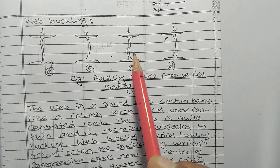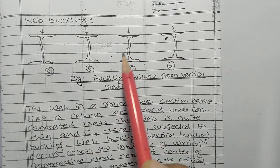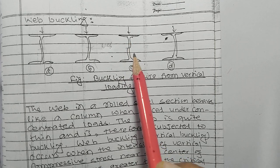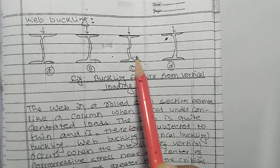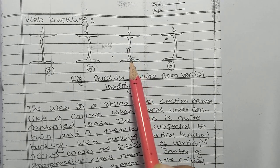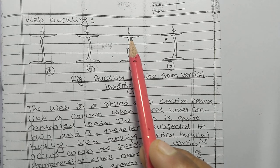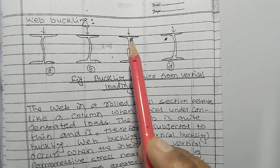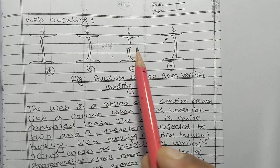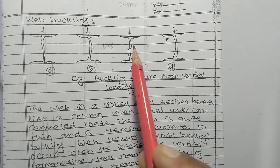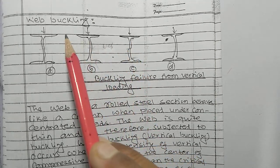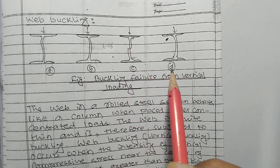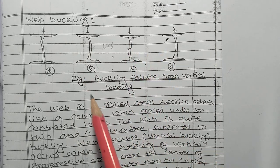But in the case of web crippling, it cripples from either the lower or the top part of the section. This is the basic difference between web buckling and web crippling.